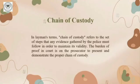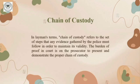In layman's terms, chain of custody refers to the set of steps that any evidence gathered by the police must follow in order to maintain its validity. The burden of proof in court is on the prosecutor to present and demonstrate the proper chain of custody. This is important because the opposition party may ask how you can prove that the chain of custody is valid or that the evidence has not been tampered with.